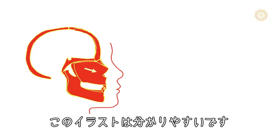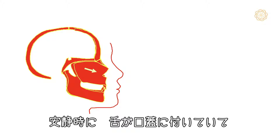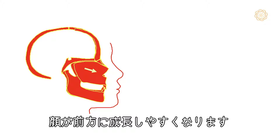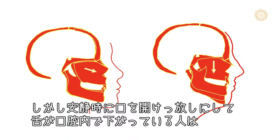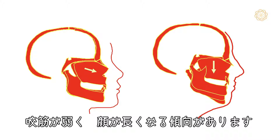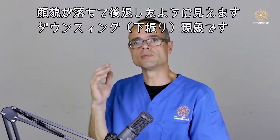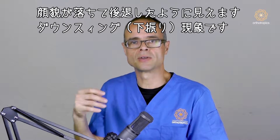This illustration is quite useful. If the tongue is on the roof of the mouth at rest and there's a strong biting force between the teeth, then the face tends to grow forwards under tight control. Yet if the tongue is hanging low in the mouth, you're resting with your mouth open, and you have weak muscle tone, then the face tends to lengthen, dropping down, and certain adjustments are then made to protect the airway.